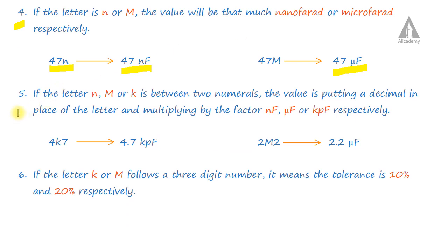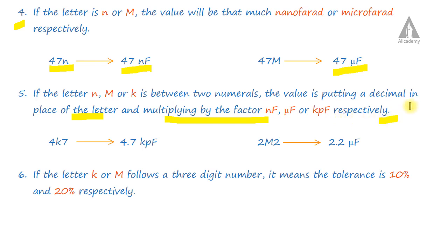Fifth type: if the letter N, M, or K is placed between two numerals, the value is obtained by putting a decimal point in place of the letter and multiplying by the factor nanofarad, microfarad, or kilopicofarad respectively. For example, 4K7 means 4.7 kilopicofarad.